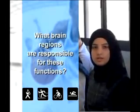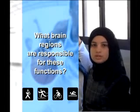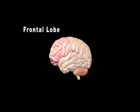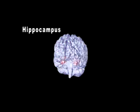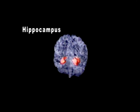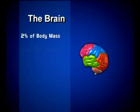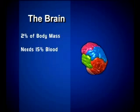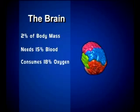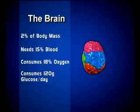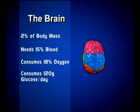What brain regions are responsible for this function? The prefrontal cortex is implicated in planning complex cognitive behaviour. The hippocampus plays a significant role in the formation of long-term memory. The brain, which constitutes only 2% of body mass, needs 15% of blood.